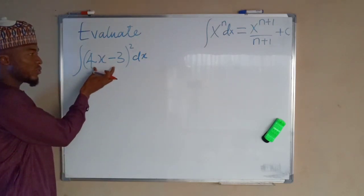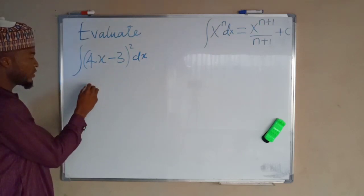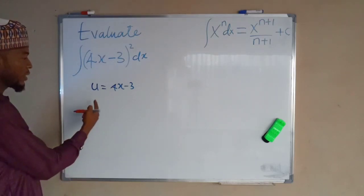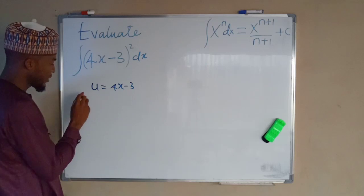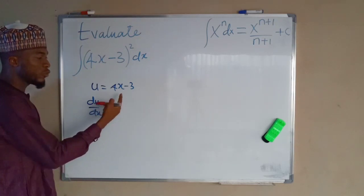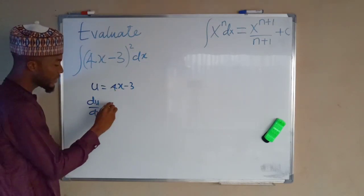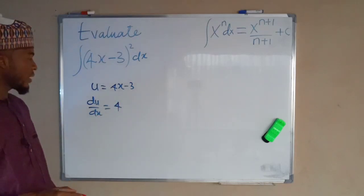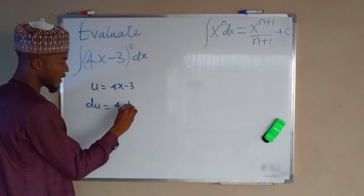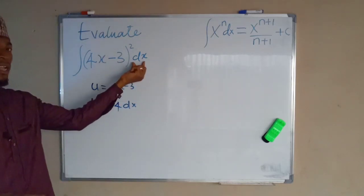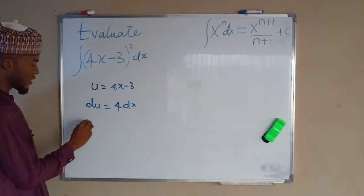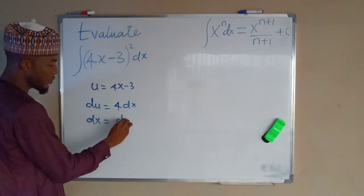The first thing we need to do is substitute the inner function with u. So let u equal 4x minus 3. The second step is to differentiate u with respect to x. du/dx is equal to 4, since the second term is constant and the derivative of a constant is 0. So du equals 4 dx, and making dx the subject by dividing both sides by 4, we get dx equals du over 4.